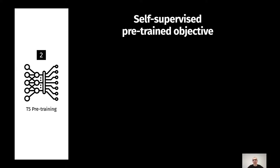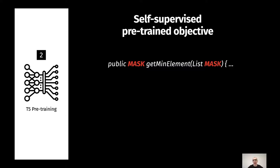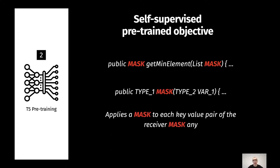For step number two, we are ready for pre-training the T5 model. In particular, we leverage the canonical self-supervised pre-training objective. This means that given an input, we randomly mask 15% of tokens and we ask the model to predict and reconstruct those masked tokens.